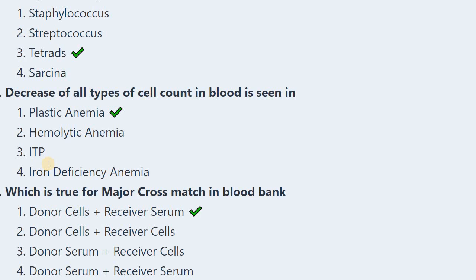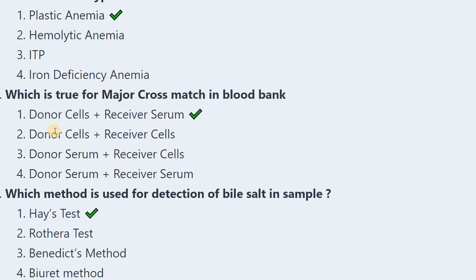Next: Decrease in all types of cells in blood is seen in — aplastic anemia, hemolytic anemia, ITP, or iron deficiency anemia? The correct answer is aplastic anemia.